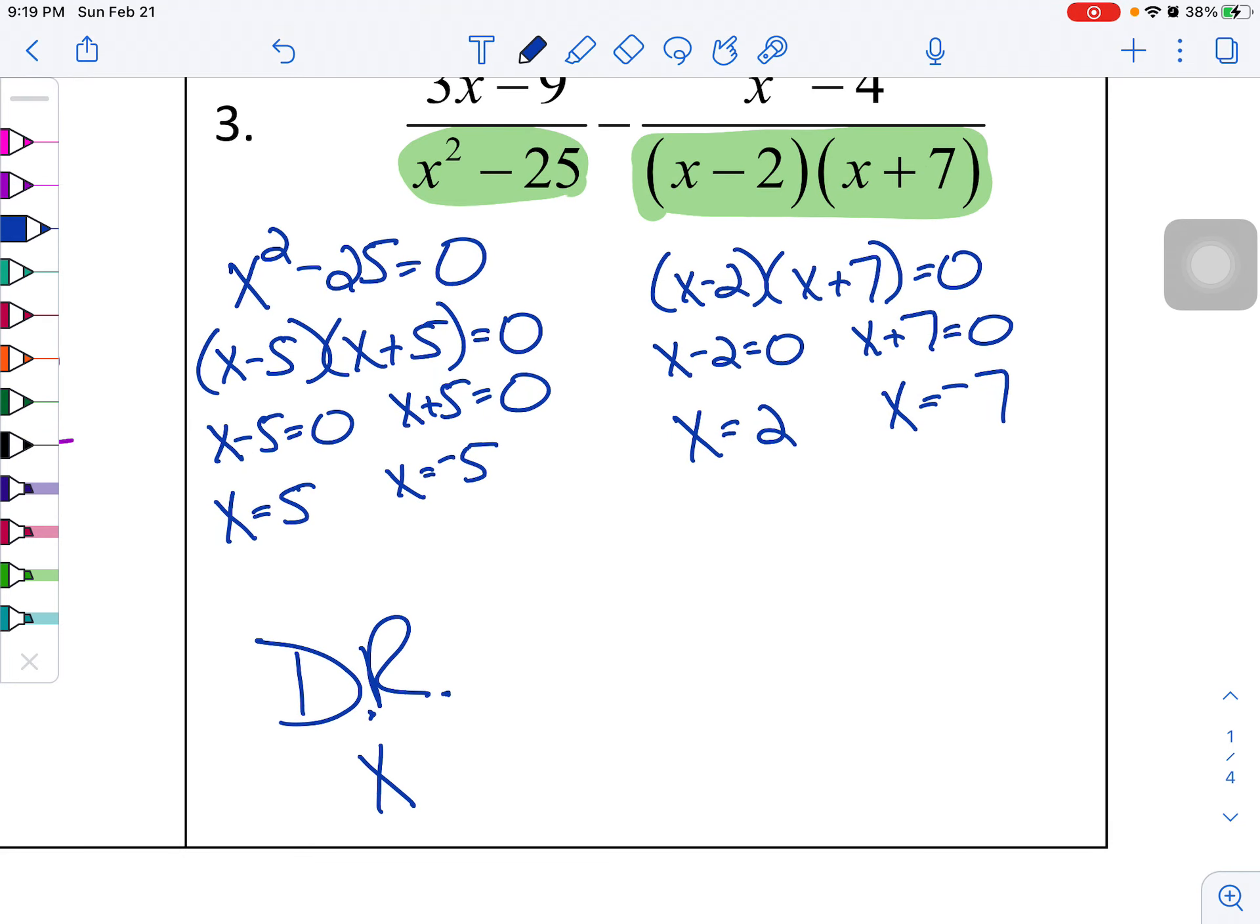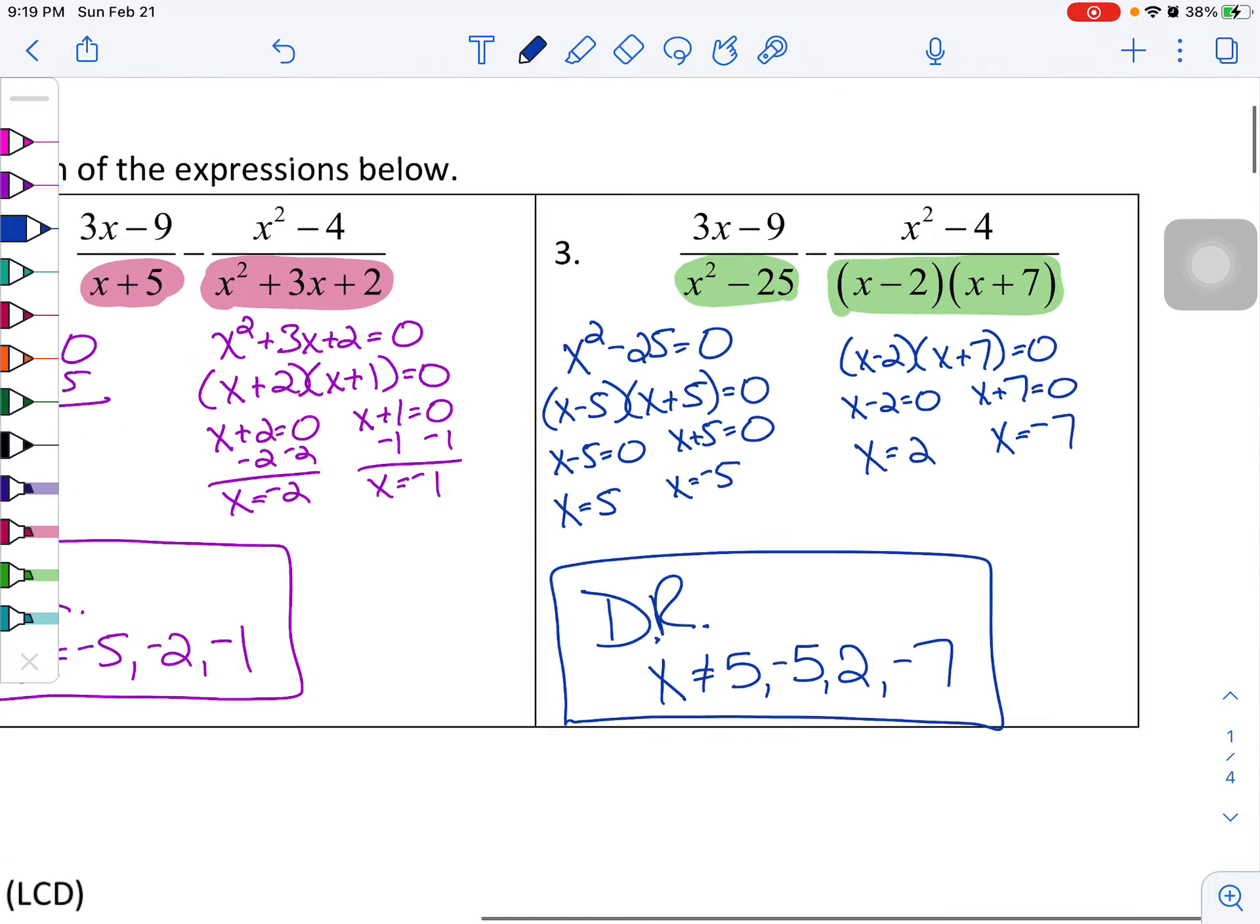In this case, I have a total of four domain restrictions. There are four different values that I have to throw out of the denominator. So x cannot equal five, negative five, two, or negative seven.